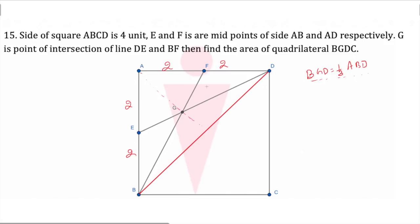Find 1/3. What is the area of ABD? Area of ABD is nothing but 1/2 into base, all the legs product, 4 into 4. So this is cancelled out. So this is nothing but 8/3. So the area of BGD is 8/3.